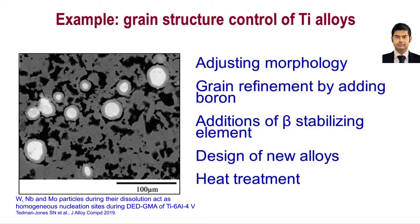Grain structure can be columnar or equiaxed depending on the values of these parameters and the alloy. Grain structures of titanium alloys can be controlled by adjusting the morphology by varying process parameters. For example, the addition of boron can refine grains. As the picture shows, a supercooled region formed around the beta-stabilizing elements such as tungsten, niobium, and molybdenum due to their dissolution, causing the particles to act as sites for homogeneous nucleation and subsequent growth of fine grains. New alloys are also being designed to achieve the desired grain structure. Finally, post-process heat treatment can be used to optimize the grain structure.